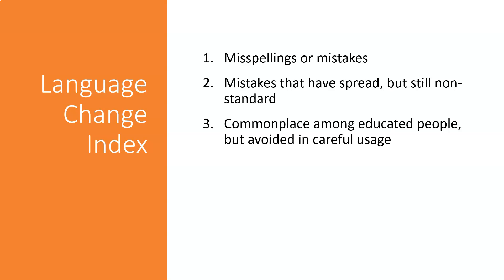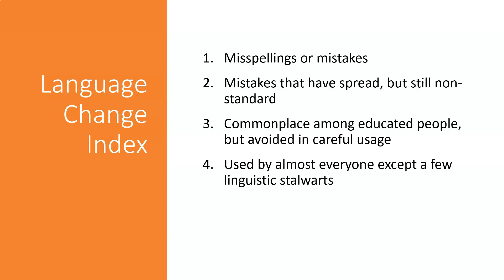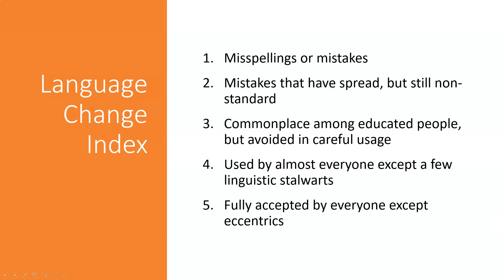Stages four and five are where the rules really change. Stage four items are widely used by almost everyone except a few linguistic stalwarts — for example, how we used to have to say 'whom' in certain contexts, but now almost everyone just says 'who,' with only a few stalwarts still using 'whom' where it's appropriate. A stage five item is fully accepted by everyone except a few eccentrics — these started as misspellings or mistakes and gradually became fully accepted by everyone in society.